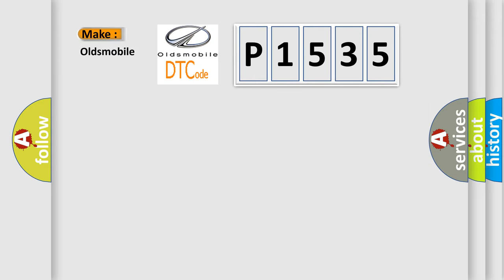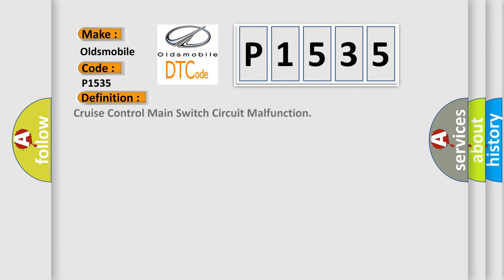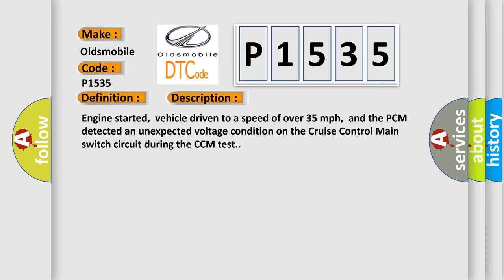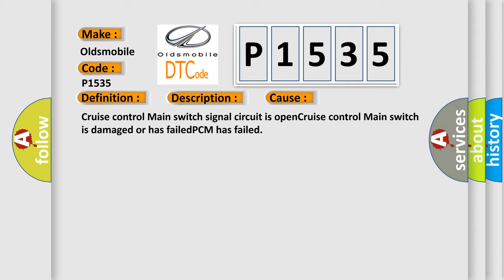So, what does the diagnostic trouble code P1535 interpret specifically for Oldsmobile car manufacturers? The basic definition is: Cruise control main switch circuit malfunction. A short description of this DTC code: Engine started, vehicle driven to a speed of over 35 miles per hour, and the PCM detected an unexpected voltage condition on the cruise control main switch circuit during the CCM test. This diagnostic error occurs most often in these cases: the cruise control main switch signal circuit is open, the cruise control main switch is damaged or has failed, or the PCM has failed.